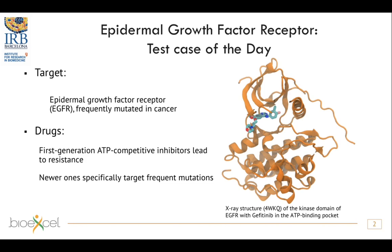AGFR is the epidermal growth factor receptor — it's a cerebral receptor — and misregulation of this receptor creates problems in the cell, and these problems in the cells may lead to cancer mostly. There are drugs that have been developed to tackle this; they are mostly ATP competitive inhibitors that bind to the kinase domain of the epidermal growth factor receptor, but resistance can be easily developed during the development of cancer, so new drugs are always needed to tackle new mutations.